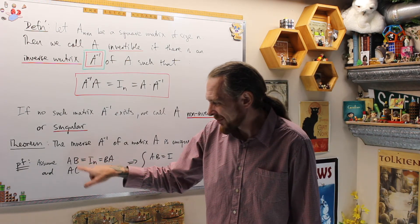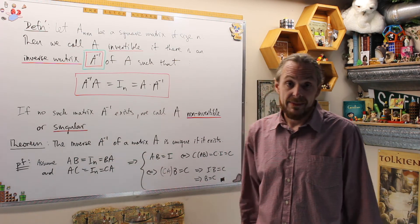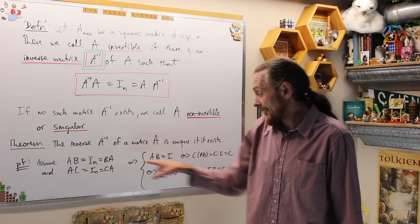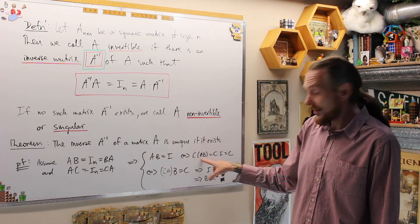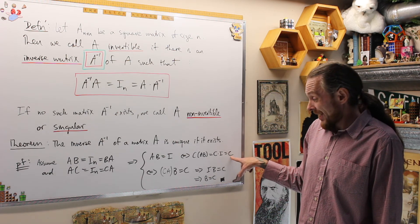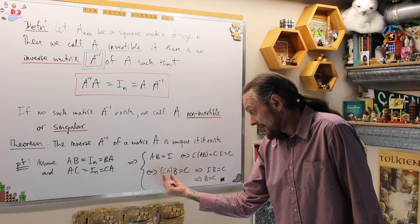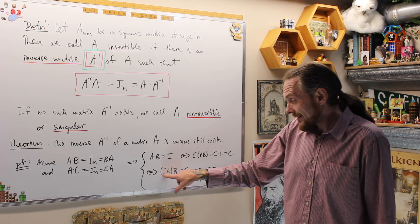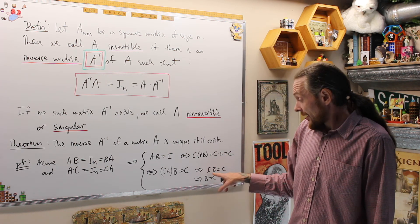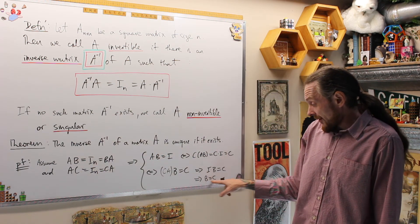For simplicity, call two candidate inverses B and C. If B is an inverse of A, then A times B = I_n and B times A = I_n. Similarly for C. Starting with A times B = I_n, multiply both sides by C: CAB = CI = C. Then associating: (CA)B = C, but CA = I_n, so I_n times B = C, meaning B = C. So if you have two matrices that both act as inverses of A, they are in fact the same matrix — the inverse is unique.